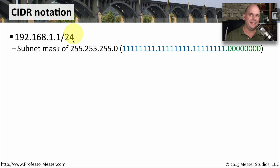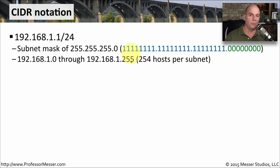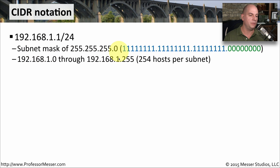So we would express this subnet as 192.168.1.1/24. It's that slash 24 that designates the CIDR block notation and the subnet mask for this network. If you were to do the math on this network, you would see that this particular subnet ranged from 192.168.1.0, which is the network address, through 192.168.1.255, which is the broadcast address. That gives you 256 separate hosts, except we don't use the network address or the broadcast address for hosts, so we subtract two and we have 254 hosts per network.